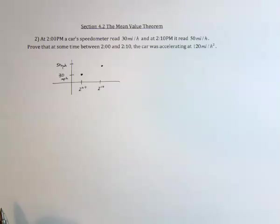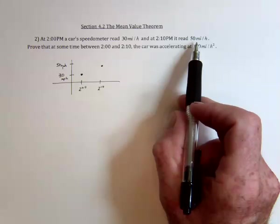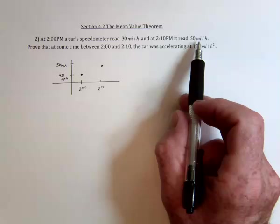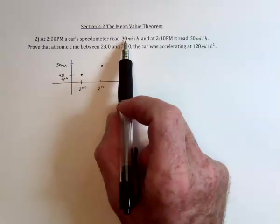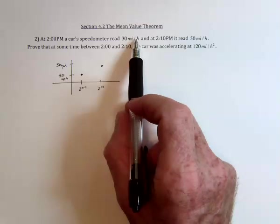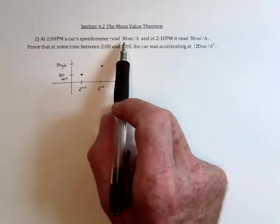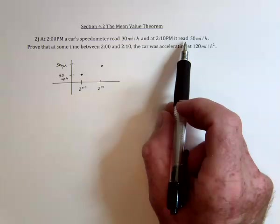And we're talking about a continuous function, because velocity, if you're going to speed from 30 miles an hour to 50 miles an hour, think about looking at your speedometer when you drive. It's going to cover everything in between. It can't just suddenly skip 31, 32, 33, 48, 49, 50.